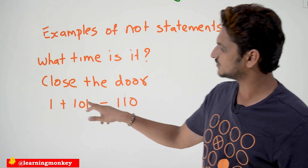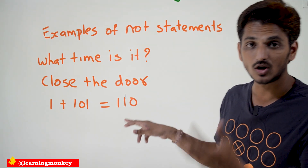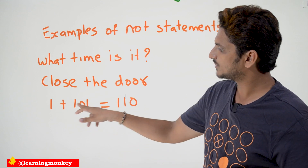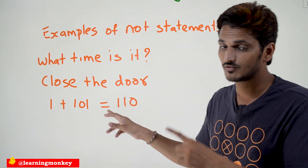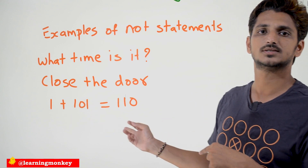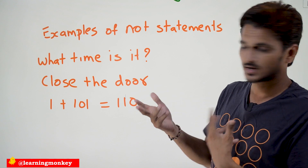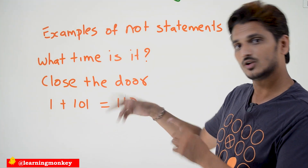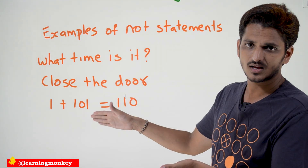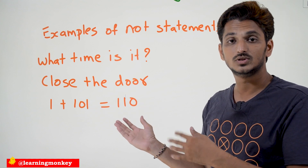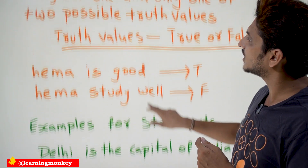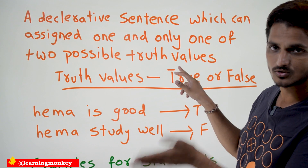Similarly, take the next one: '1 + 101 is equal to 110.' Can you call it a statement? No. Why? If you consider this in binary numbers, it is true. If you consider this in decimal numbers, it is false. So we don't have a proper, definitive understanding. You can assign true or you can assign false depending on the context — that's why this is not accepted as a statement. The condition says you can assign any one truth value, either true or false, unambiguously.